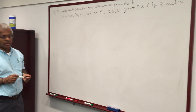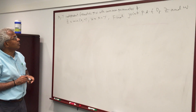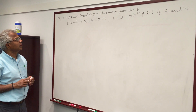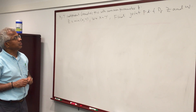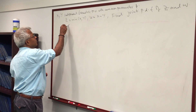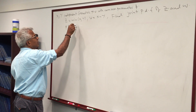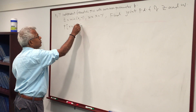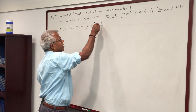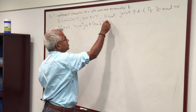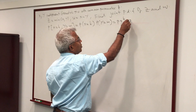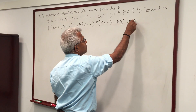Let's look at this discrete random variable problem. We have two random variables X and Y which are independent and both are geometric with the common parameter P. That means the probability of X equal to K, Y equal to M is the probability of X equal to K multiplied by the probability of Y equal to M, and each of them are of the form PQ to the power K and PQ to the power M.